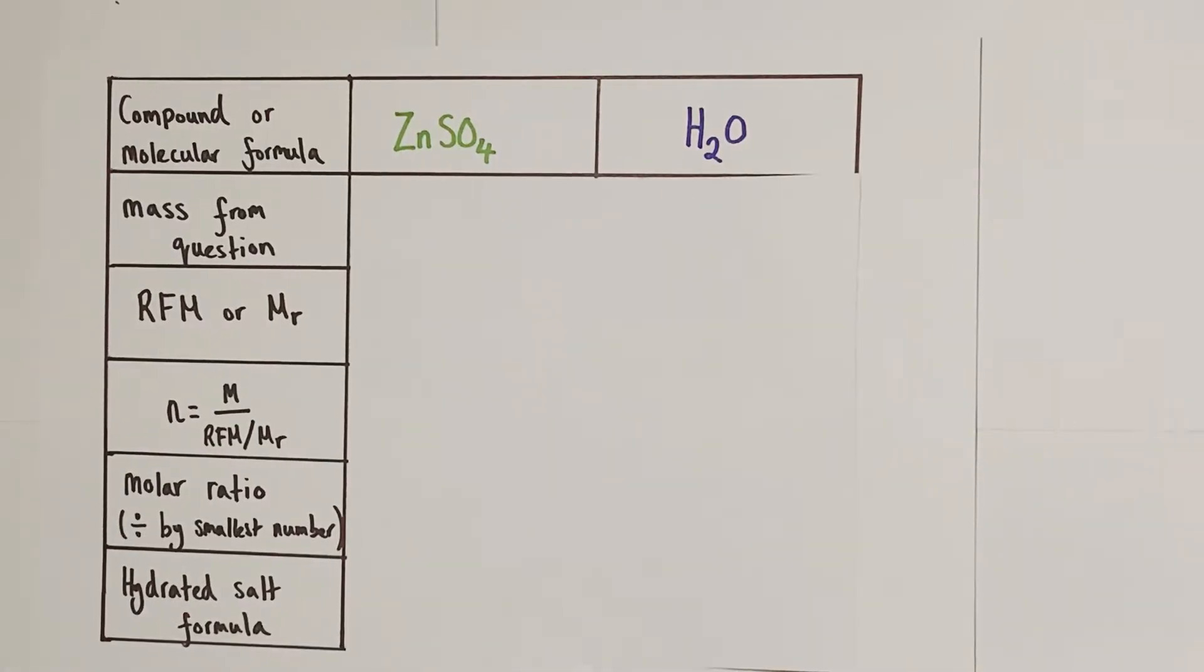Now we come to the particular empirical formula grid method section of the calculation, and for hydrated salts there are a few variations on the standard empirical formula grid we have to take into consideration. Usually the empirical formula grid's first row contains the label elements and we write down the elements found within the question for the empirical formula problem we're trying to solve.